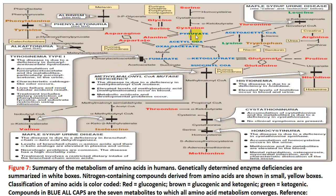Histidinemia results from deficiency of the histidinase enzyme, resulting in elevated levels of histidine in blood and urine. Histidinase enzyme is required for conversion of histidine to urocanate, which is then converted to glutamine. Deficiency of this enzyme leads to accumulation of histidine in blood and urine.